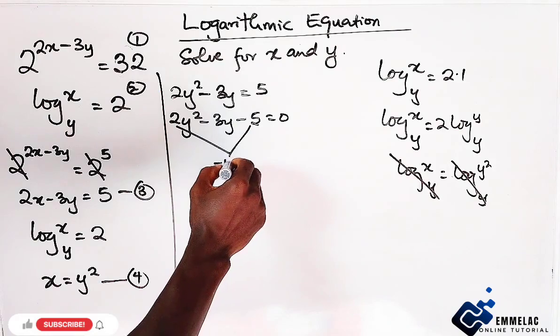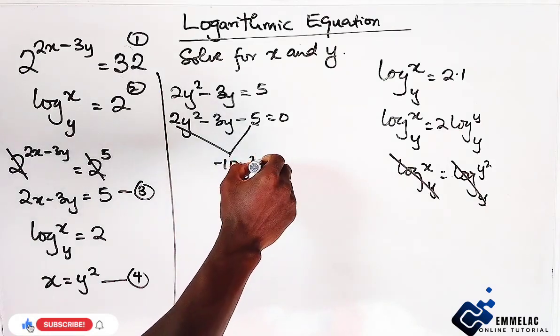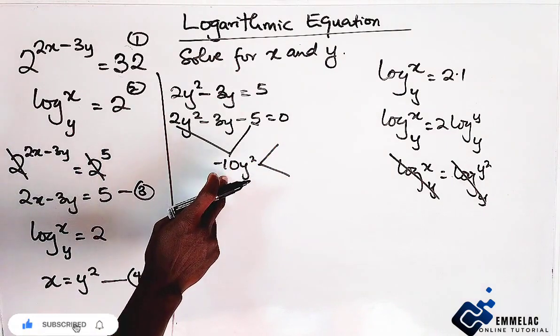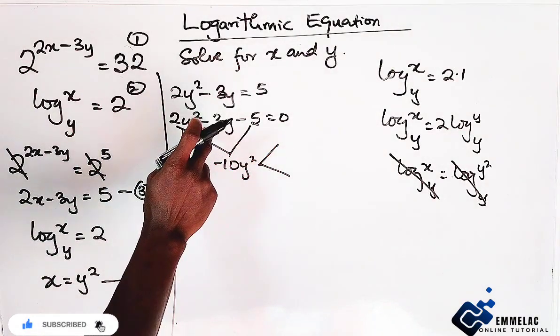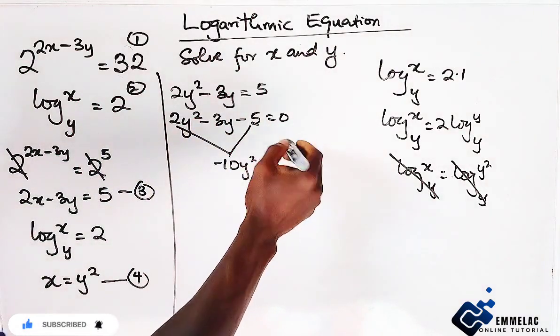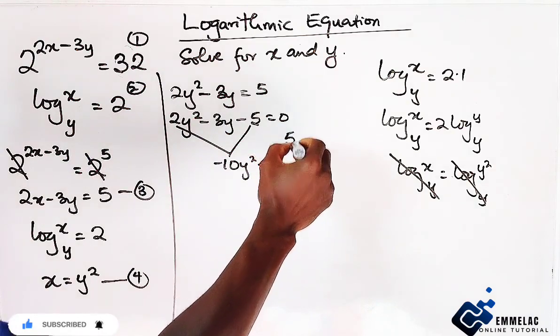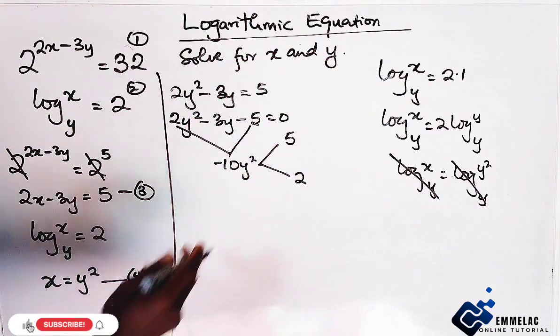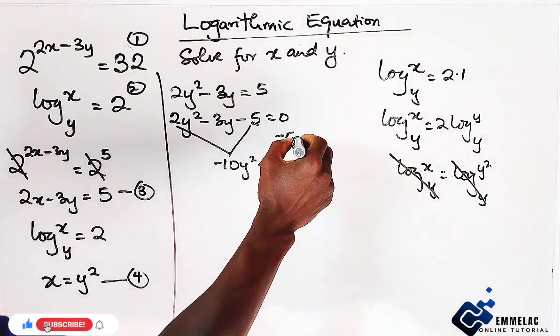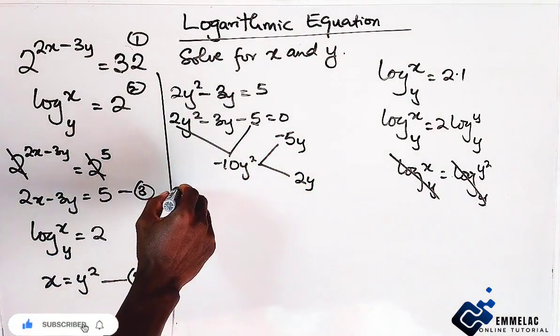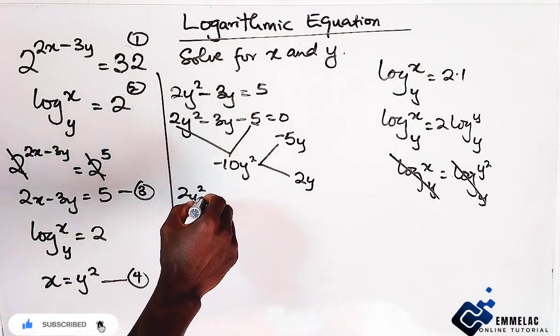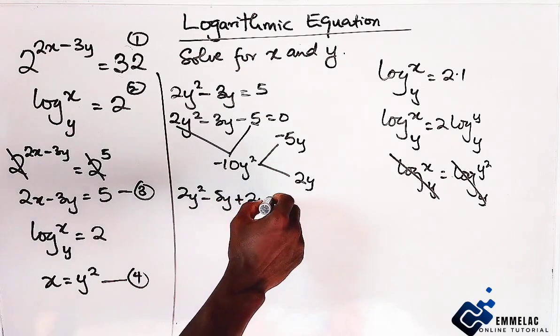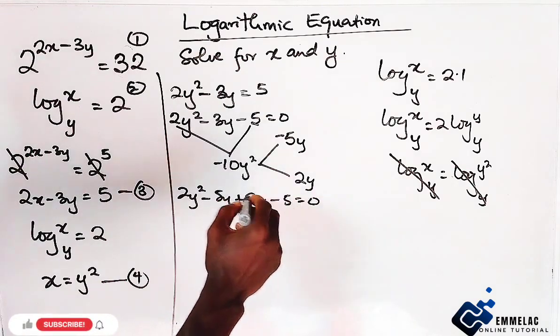Solving this by factorization. Here we have negative 10y squared. What are we going to multiply to give us minus 10 and add to give us minus 3. There we have it. We have 5 and 2. Since they are negative, so we introduce negative here. You have 2y squared minus 5y plus 2y minus 5 all equals to 0.